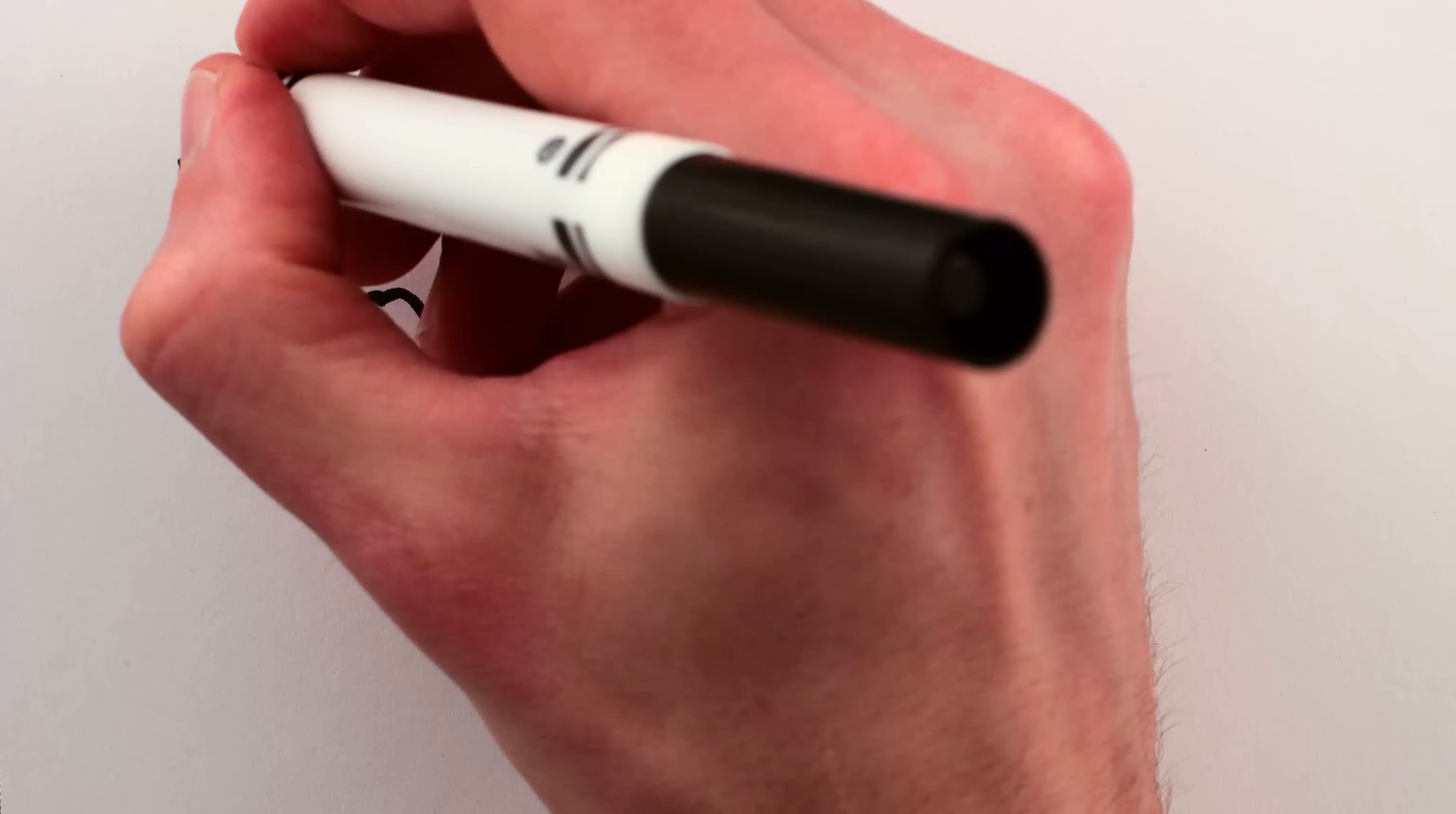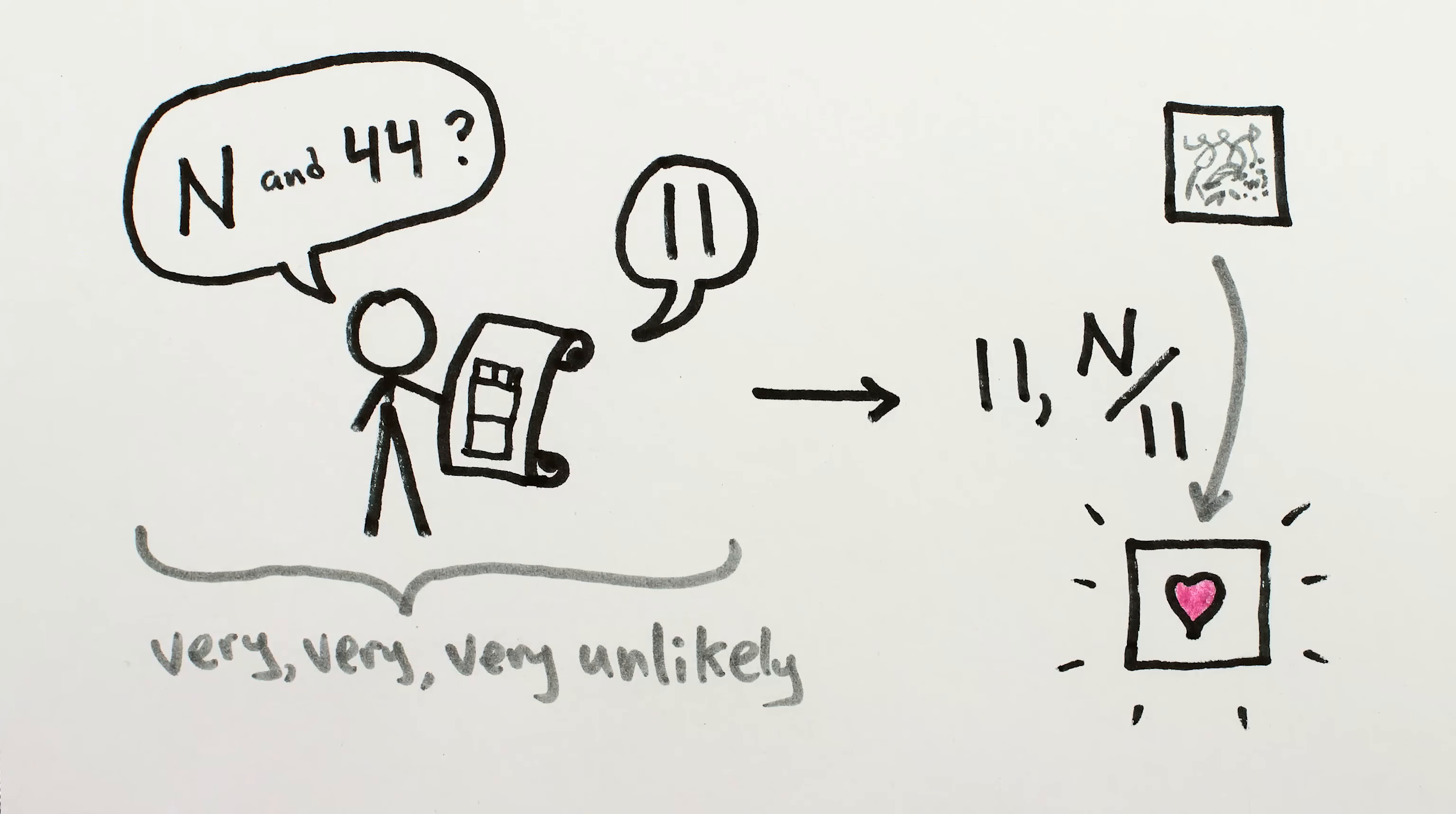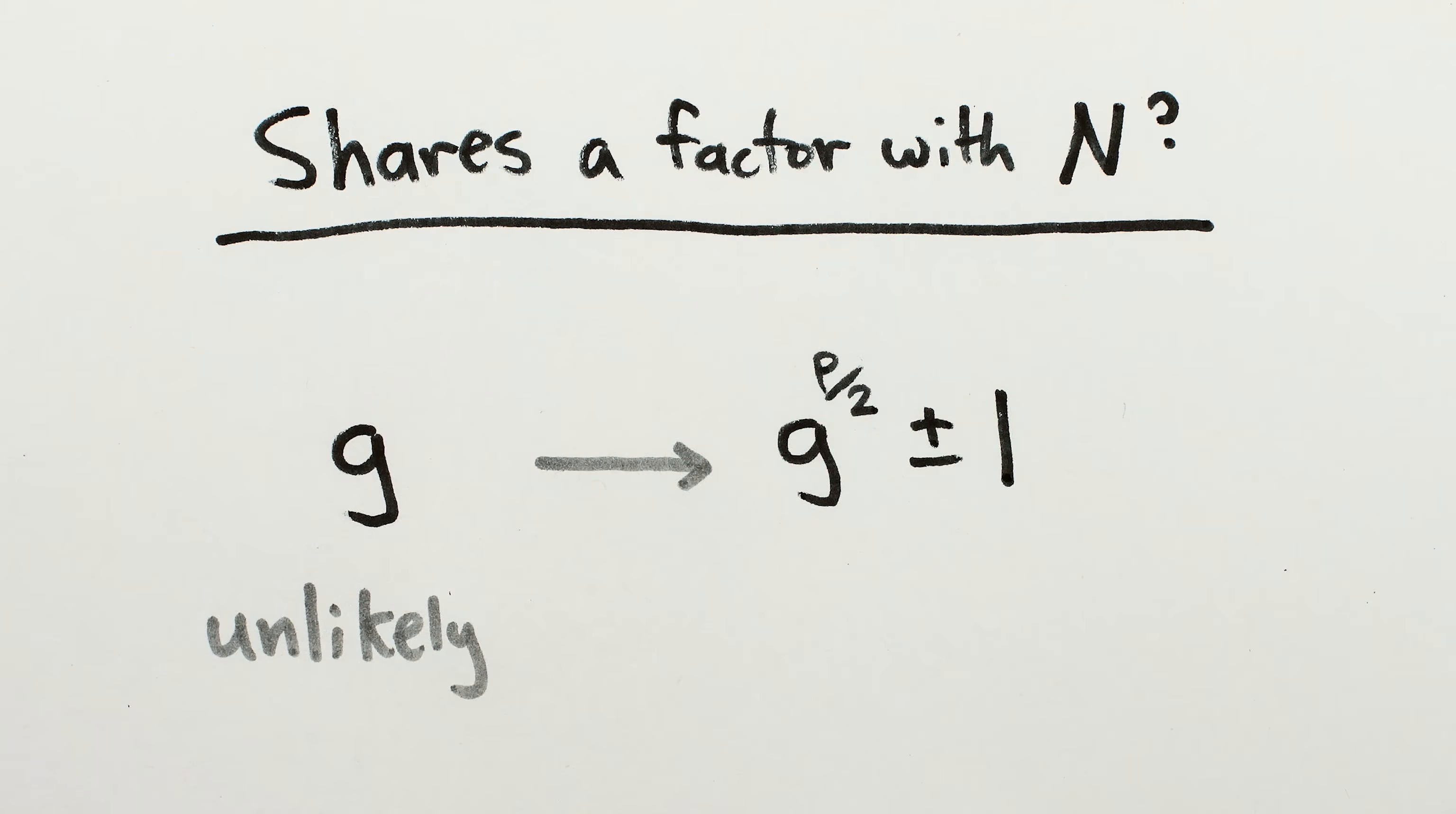And if Euclid's algorithm found any shared factors with n, then we'd be done. You could just divide n by that factor to get the other factor and break the encryption. But for the big numbers used in encryption, it's astronomically unlikely that any single guess will actually share a factor with n. Instead, we'll use a trick to help transform your crappy guess into a pair of guesses that are way more likely to share factors with n.